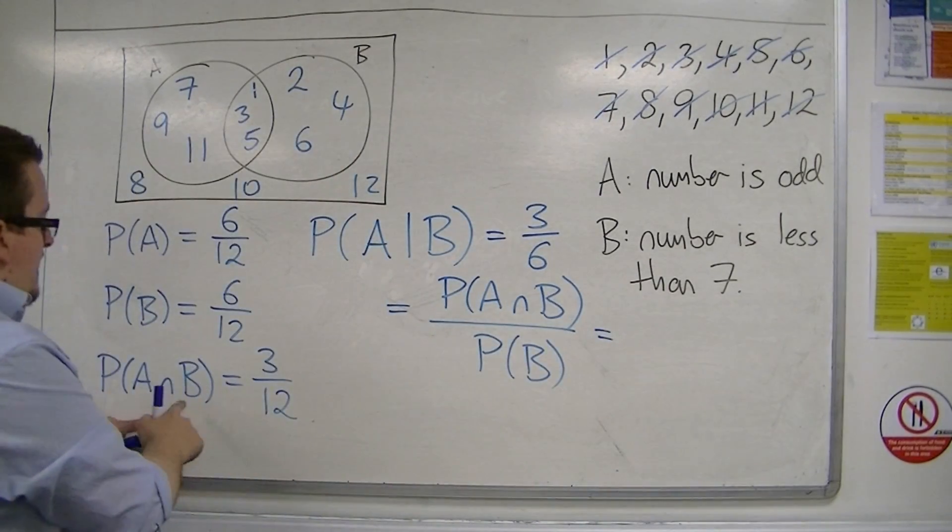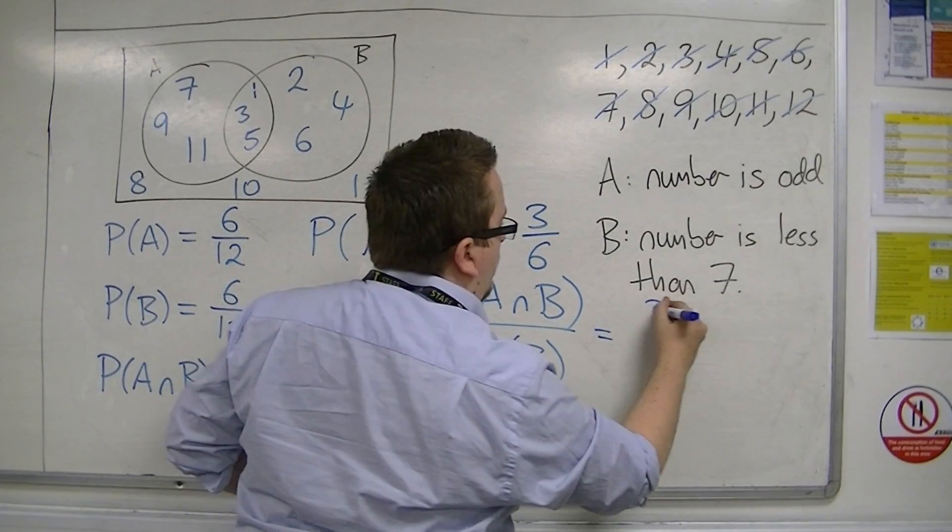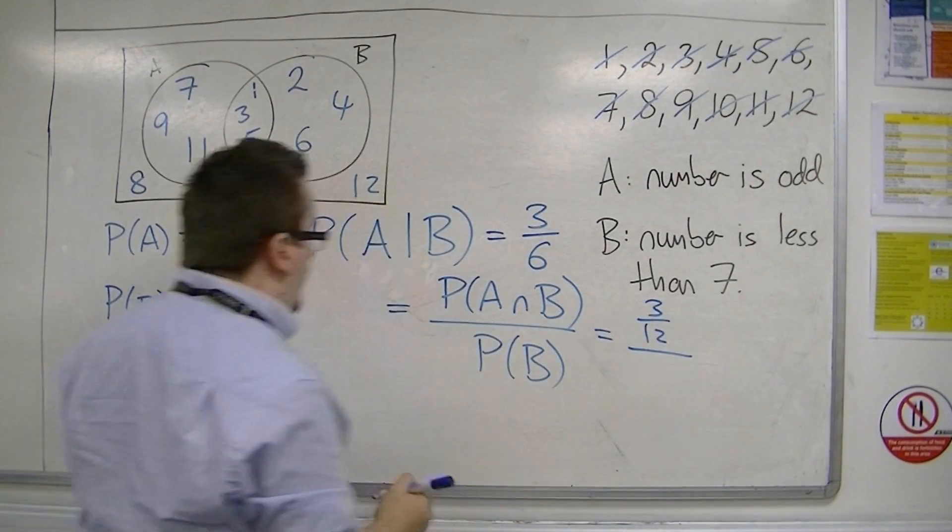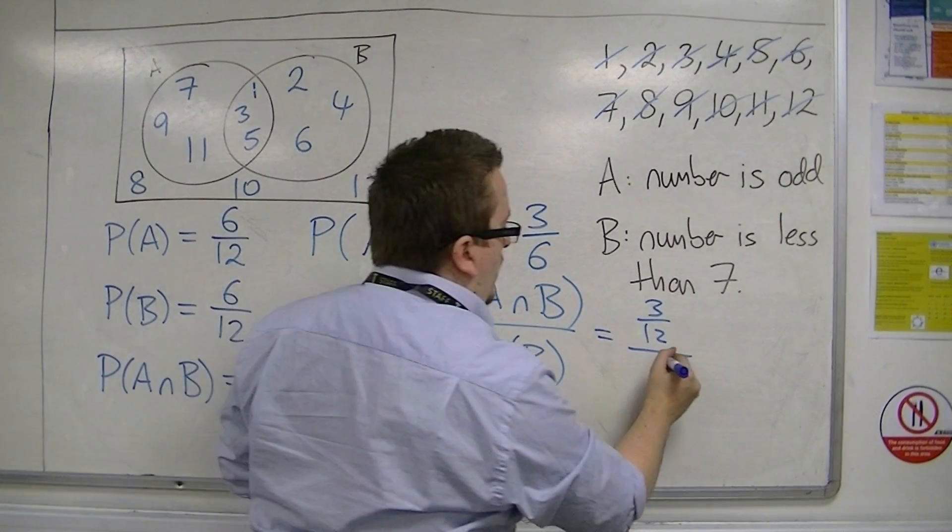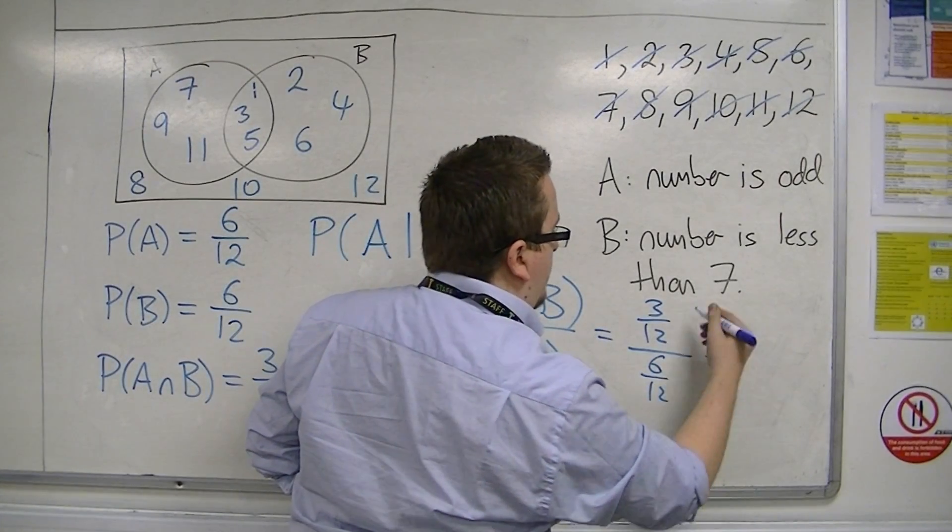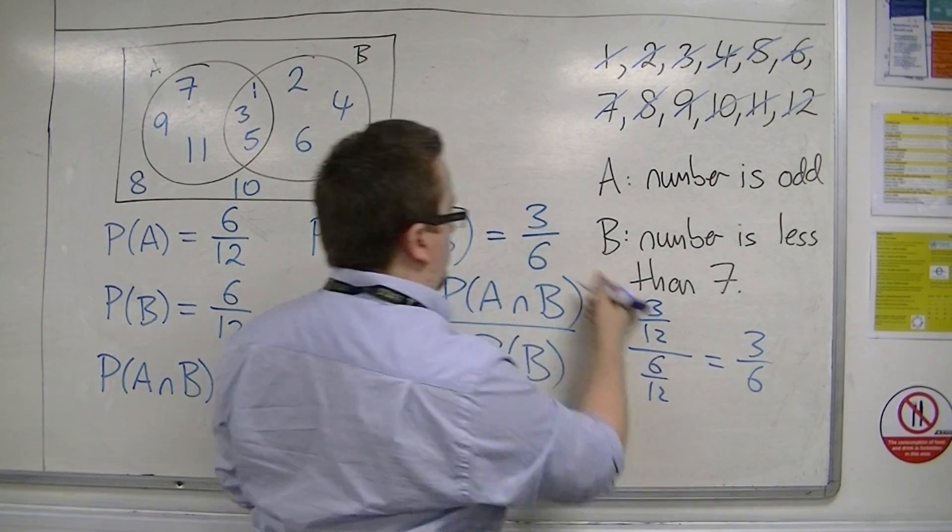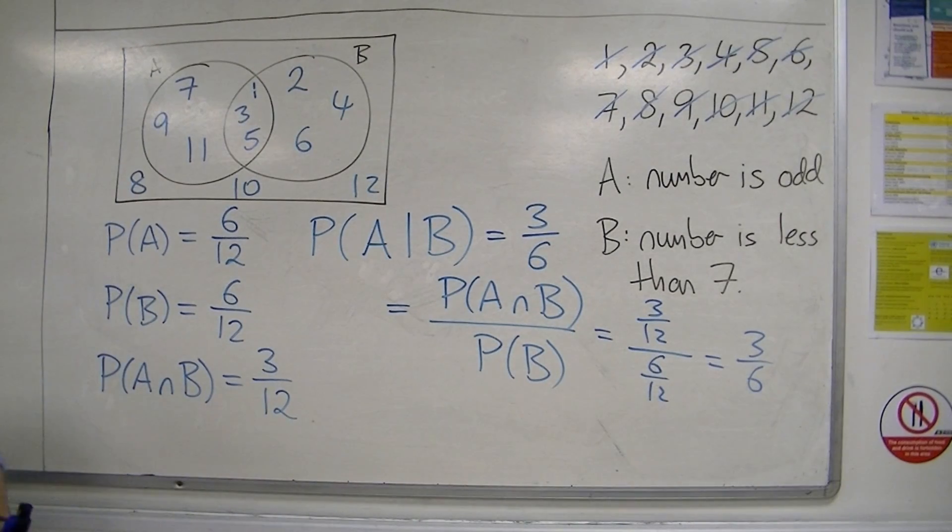So, if you know the intersection of B, 6 over 12, you can divide that by the probability of B, 6 over 12, and get left with 3 over 6, which is what we identified before.